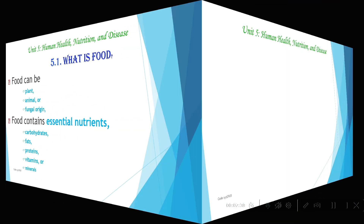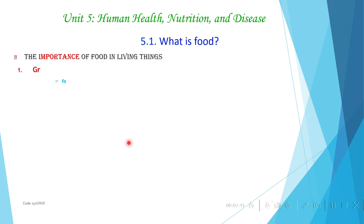The first importance of food in living things is for making new cells, tissues, and organs. If there is no sufficient food, it is difficult to form new cells, new tissues, and new organs. As a result, there is no proper growth unless we get proper food.